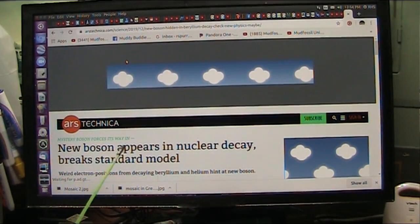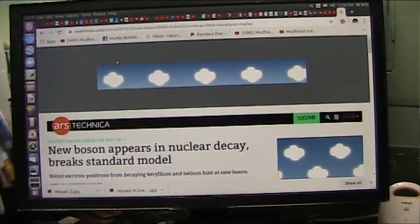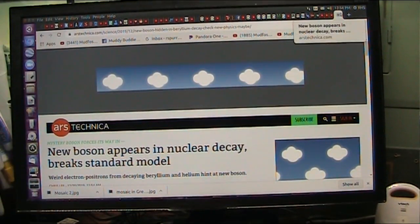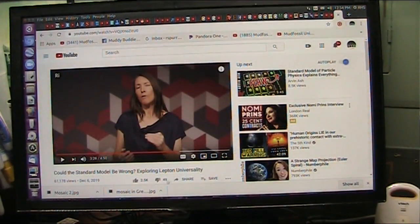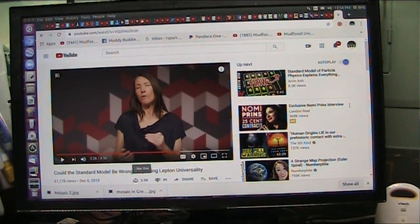Right now they say the new boson appears in nuclear decay, breaks standard model, no question whatsoever. What else is being said? Here is the Royal Institution of London says that lepton universality doesn't work. I've been reporting this for years. Now they finally are agreeing.